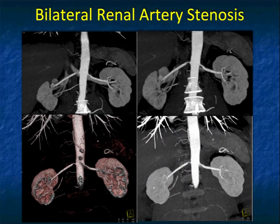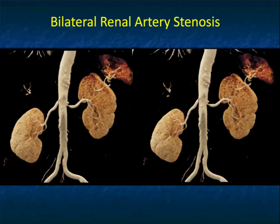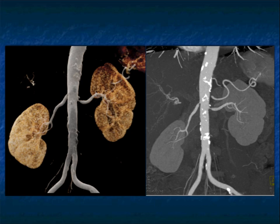Because the renal arteries are not horizontal, it's much easier to define the degree of stenosis on 3D images. We can also use cinematic rendering — here is bilateral renal artery stenosis, worse on the left than on the right. A variation on cinematic rendering with custom presets gives a really good look at the vessels, and you can compare it with the patient's MIP, which also shows the stenosis very well.